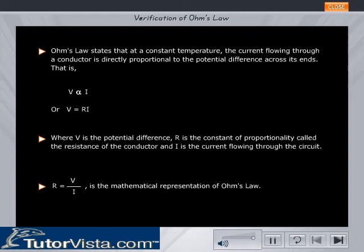Where V is the potential difference, R is the constant of proportionality called the resistance of the conductor, and I is the current flowing through the circuit. R equals V by I is the mathematical representation of Ohm's law.